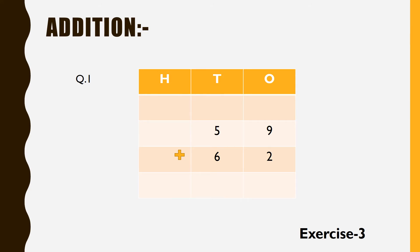On this slide, I have taken the first question from exercise 3 of the chapter on addition. In the first example, they have given us two numbers — 59 and 62 — and the question is to add these two numbers. We will write 59 and 62 in the format of tens place and ones place.